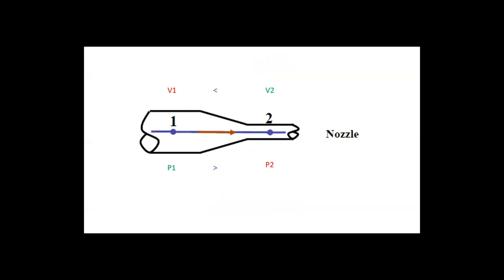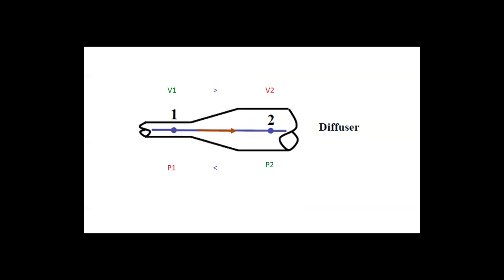In conclusion, the Venturi effect explains why there's an increase in velocity with a decreasing pressure due to the principle of mass continuity when a fluid flows through a constriction, and vice versa when there's an expansion, so there's a decrease in velocity as pressure increases.